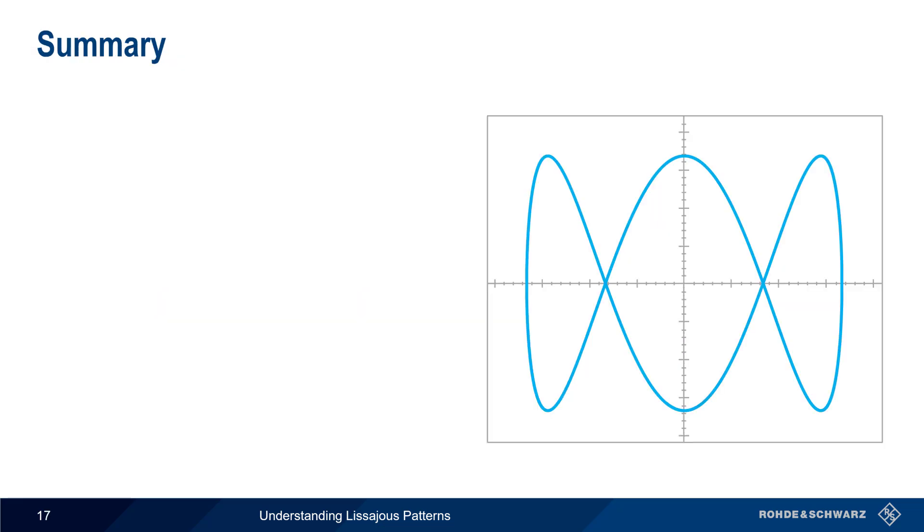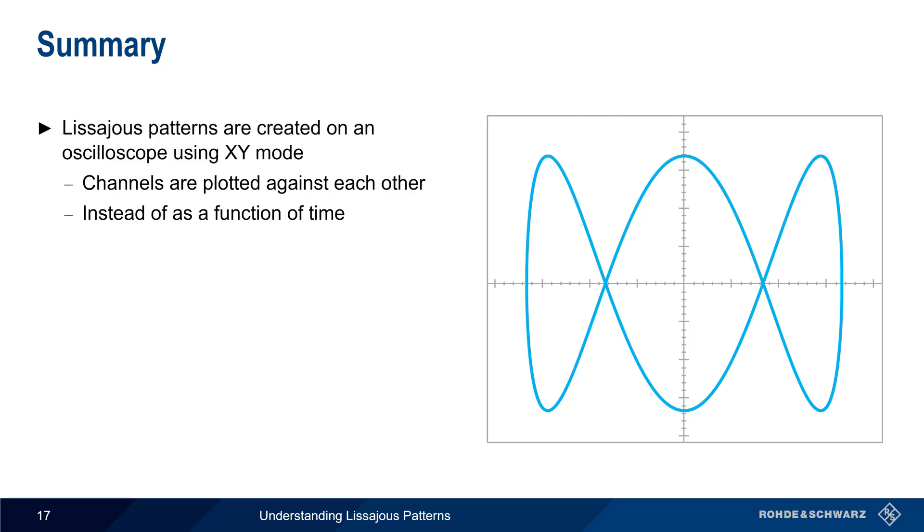Let's end with a brief summary. Lissajous patterns, or curves, are created on an oscilloscope in so-called XY mode by plotting two input channels against each other, instead of plotting them individually as functions of time.